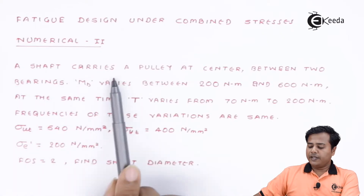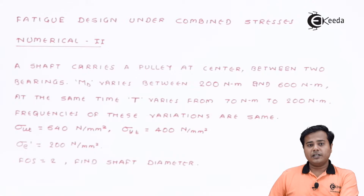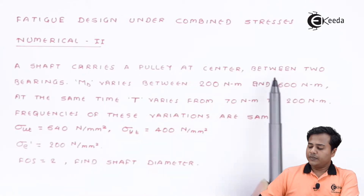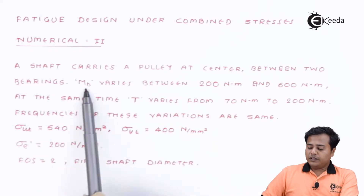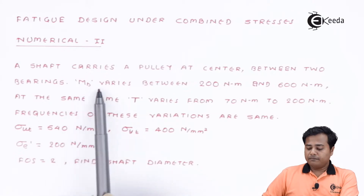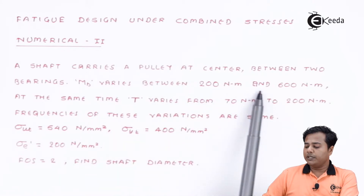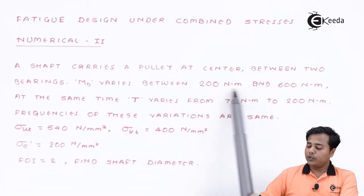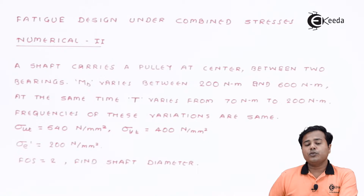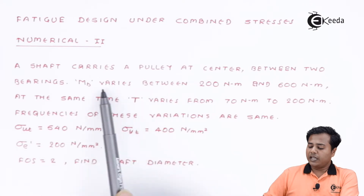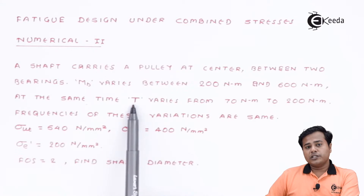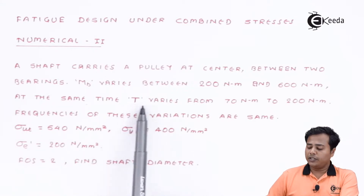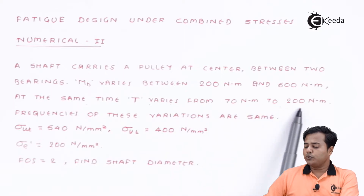The problem states that a shaft carries a pulley at the center, mounted between two bearings. The bending moment MB varies between 200 Nm and 600 Nm — these are the two extreme values. There is no normal or axial load given; instead, bending moment values are given. The torsional moment varies from 70 Nm to 200 Nm.